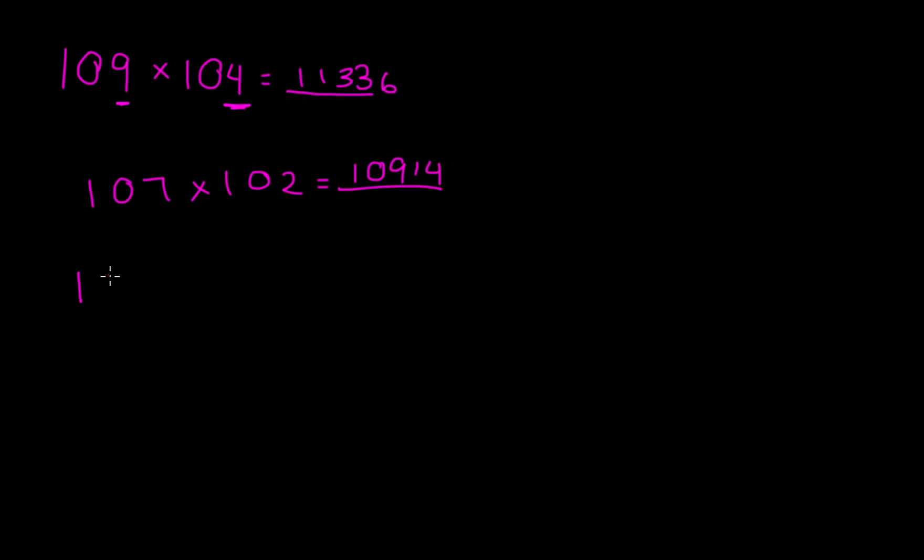Let's do another one: 105 times 103. The last two digits would be 15, and then 108, because you're taking this digit plus this digit plus 100. So 5 plus 3 is 8, plus 100 is 108. And as you can see, this is a super fast trick.